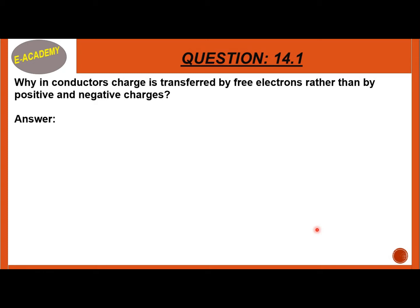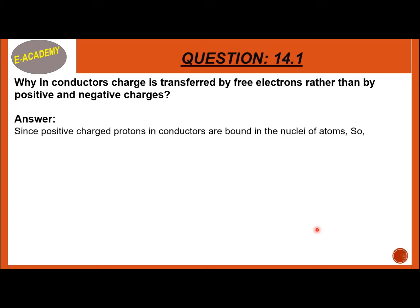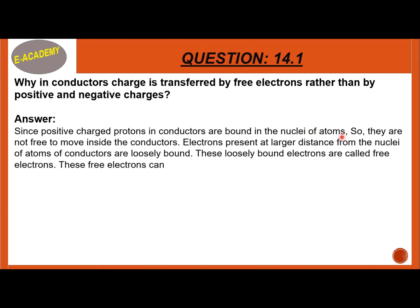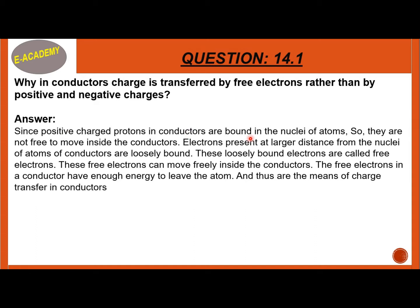In a conductor, there are only positive and negative charges. The positively charged protons are bound in the nuclei of atoms, so they are not free to move. Electrons present at a larger distance from the nuclei are loosely bound to the nuclei. These loosely bound electrons are called free electrons.